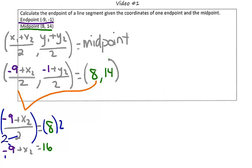And then we're going to use inverse operations one more time. We're going to add 9 to both sides, and we will get that our x value is 25.